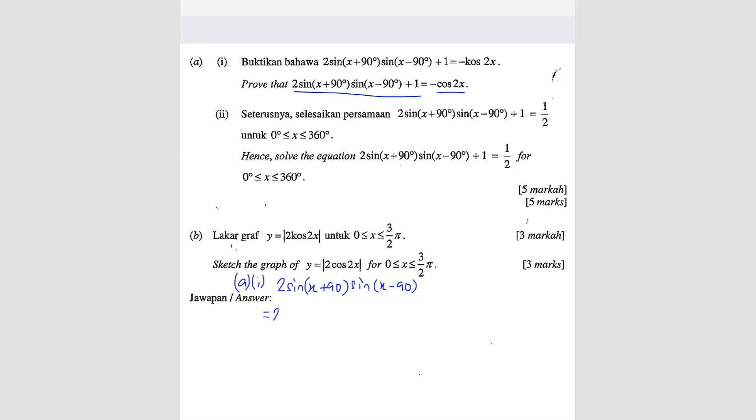So this one you can expand. You get 2[sin(x)cos(90°) + cos(x)sin(90°)]. You got this on one side and this one when you expand, you get sin(x)cos(90°) - cos(x)sin(90°). So one thing we know is that cos(90°) is equal to 0. So this whole thing becomes 0. This whole thing here becomes 0.